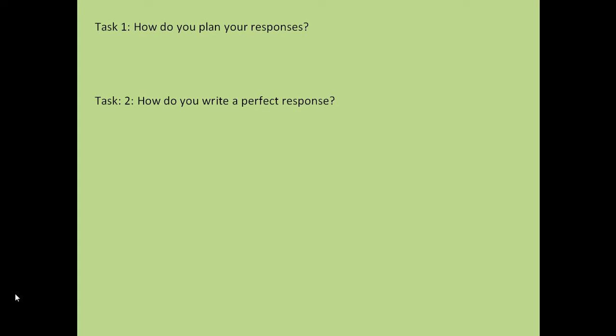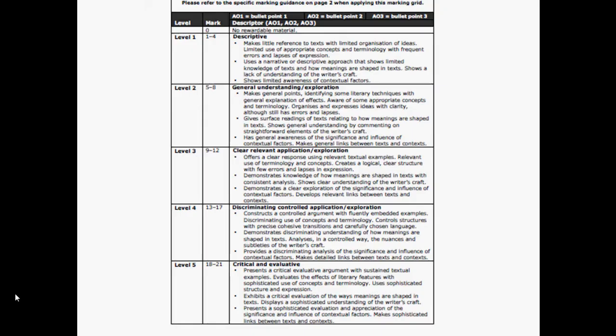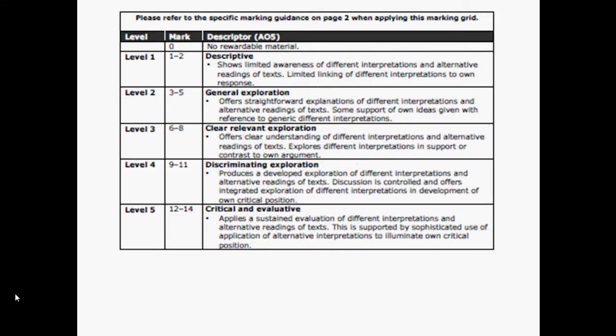So if you're revising, how do you plan and write this response? Pause and note down your ideas. When you're ready, press play to resume. To achieve full marks: 21 of the marks are for AOs 1, 2, and 3. To achieve Level 5 you need to create a sophisticated argument using terminology at a sophisticated level throughout — intelligent ideas, not just basic ideas. You need to show how structure, form, and language support meaning in a sophisticated, intelligent way. You also need to present and evaluate the significance of context.